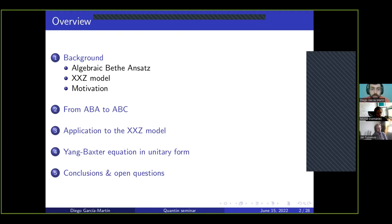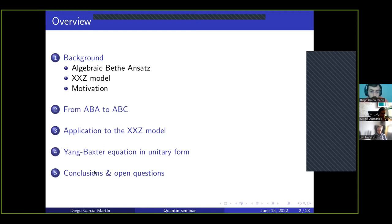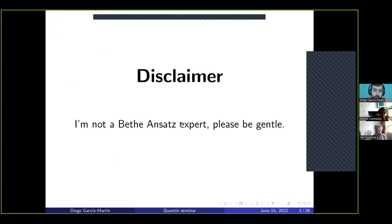I will explain our proposed method to transform the algebraic Bethe ansatz into algebraic Bethe circuits, and show how to apply it to the XXZ model. Before concluding, I will show a result we derived while working on this conversion — a new form of the Yang-Baxter equation. We actually found a unitary form of this famous Yang-Baxter equation. Then finally I will provide some conclusions and discuss some open questions.